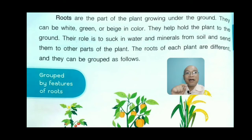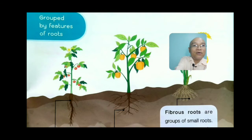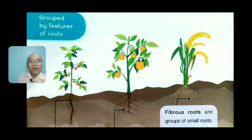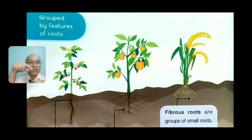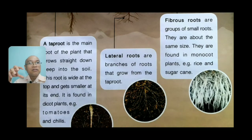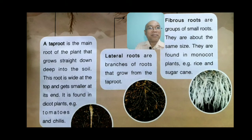The roots of each plant are different and they can be grouped by features of roots. Look at the picture — you can see the roots going down. Fibrous roots are groups of small roots that are about the same size. They are found in monocot plants, for example rice and sugarcane.